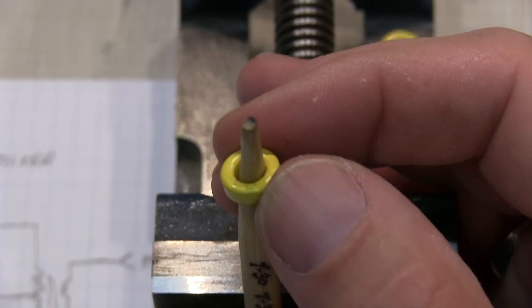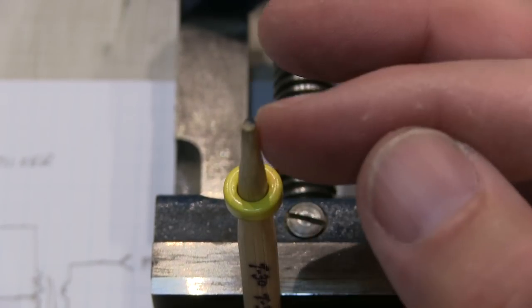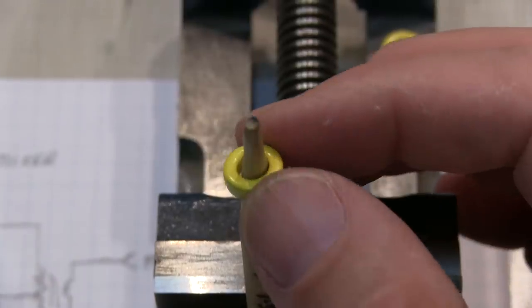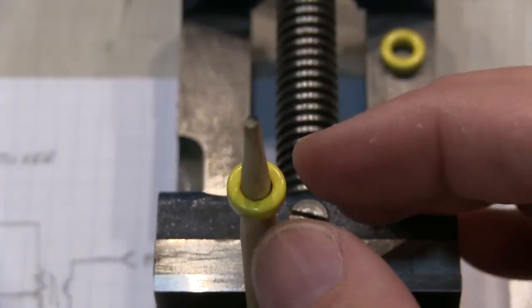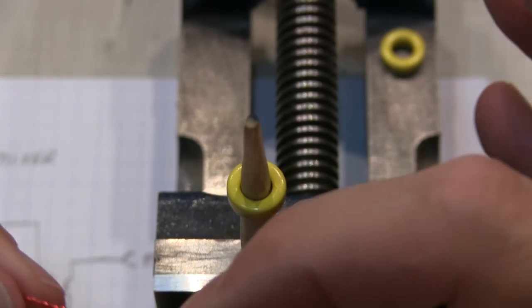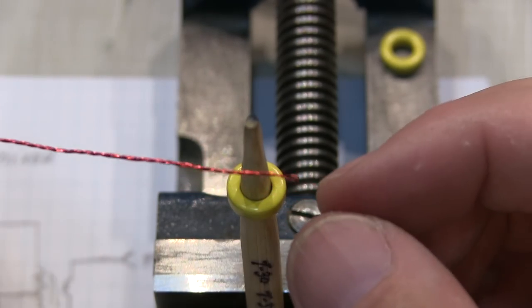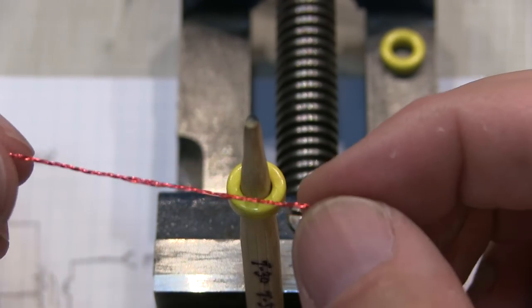To wind this T37 toroid, I'm just using my sharpened chopstick and a metal vise here to hold it down. Now we're going to need about 10 turns of a tri-filer wound winding. A tri-filer means that you essentially have three wires, and I've got essentially three wires all twisted together here.